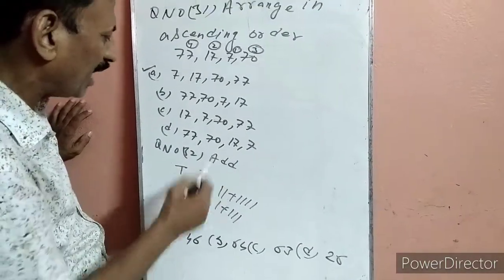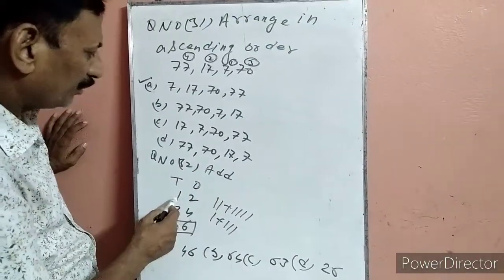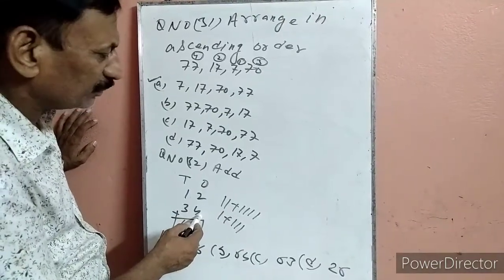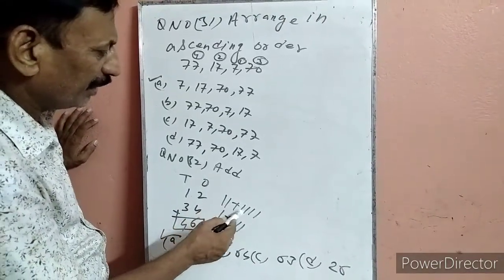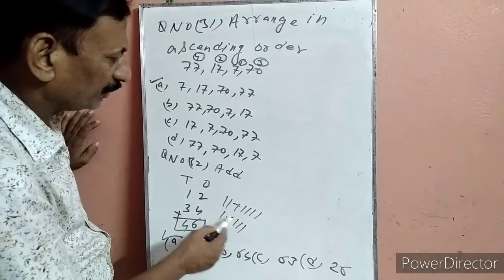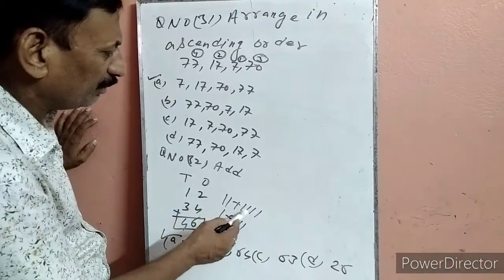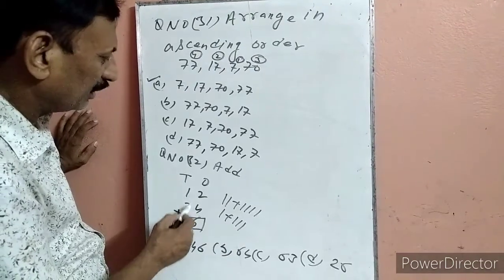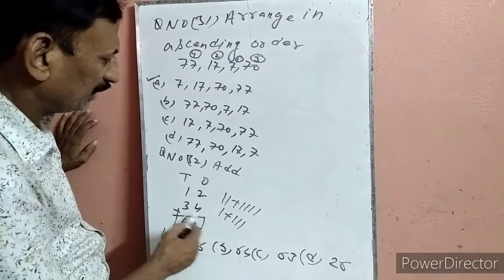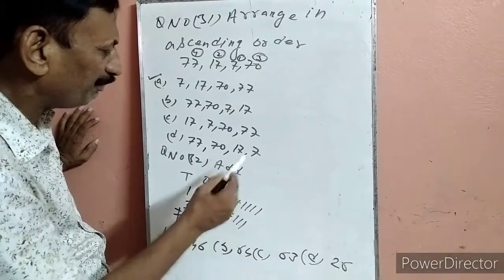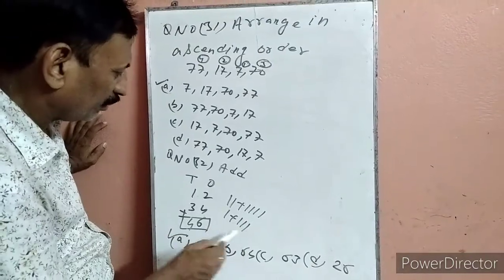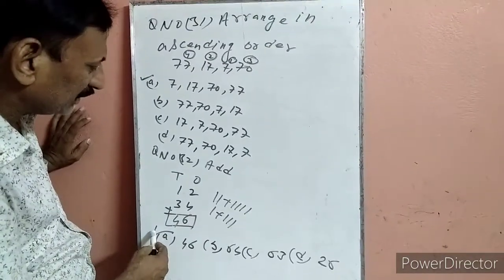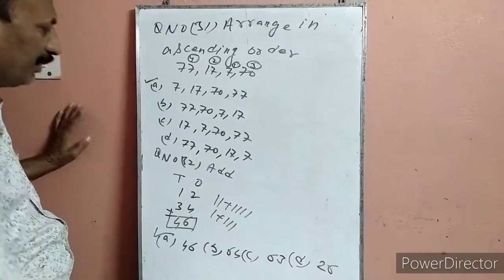Question 32: Add — 12 plus 34. Units: 2 और 4 को add किया: 1, 2, 3, 4, 5, 6. Tens: 1 plus 3 — 1, 2, 3. Answer 46. इसलिए हमने एक पर टिक किया.